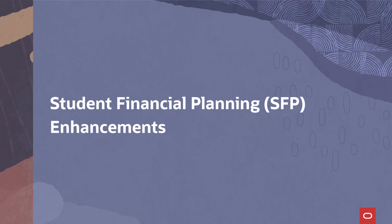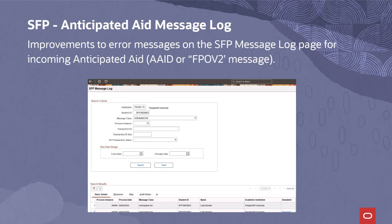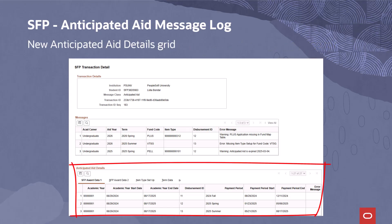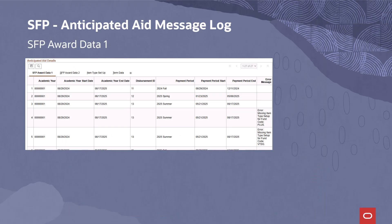This Student Financial Planning enhancement is designed to help users troubleshoot issues and discrepancies that might arise when Campus Solutions anticipated aid entries are created from incoming FPOV2 messages from SFP. The Transaction Details page, accessed from the SFP Message Log Search Results Data tab, will now include an Anticipated Aid Details grid. This provides a comprehensive view of the SFP fund data contained in the FPOV2 message, along with mapped item type and term data from Campus Solutions, and allows users to troubleshoot anticipated aid data issues by providing the mapped item type setup data that controls whether an SFP fund would generate an anticipated aid entry — such as whether there is an SF item type configured to create an entry for an estimated award. This tab includes academic year and disbursement data from SFP, as well as a column for error messages triggered by validation performed when messages are pulled from SFP to Campus Solutions.